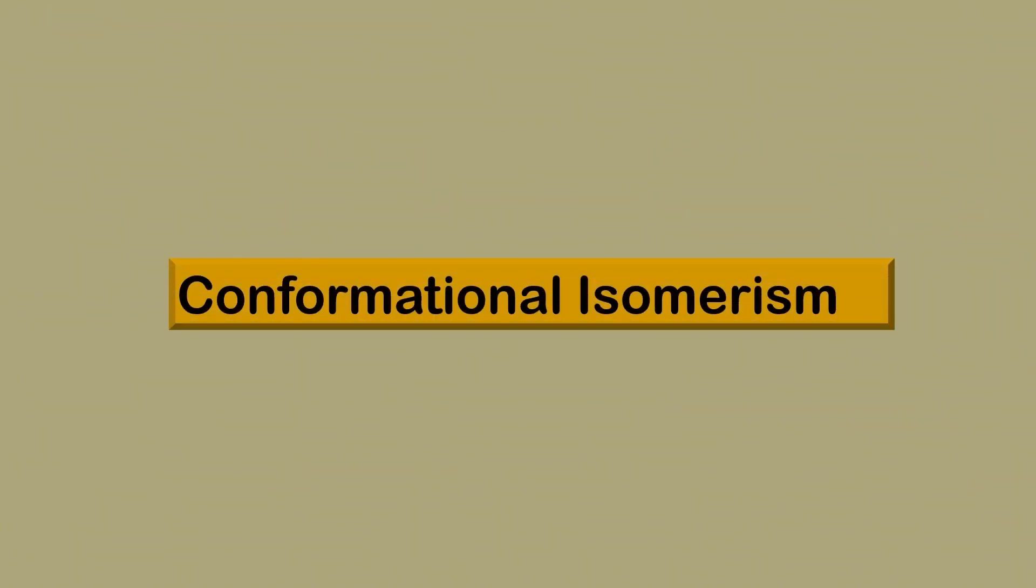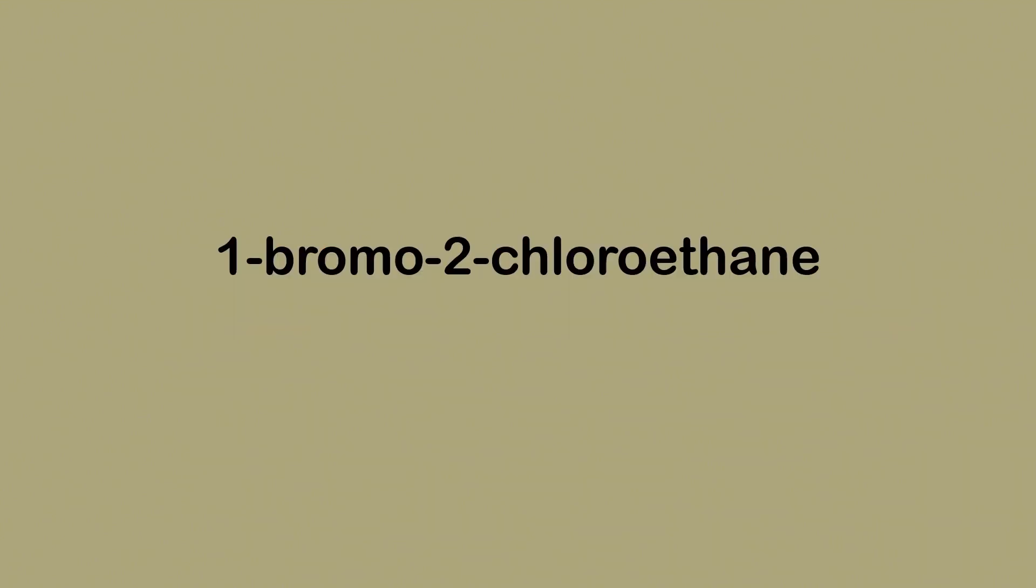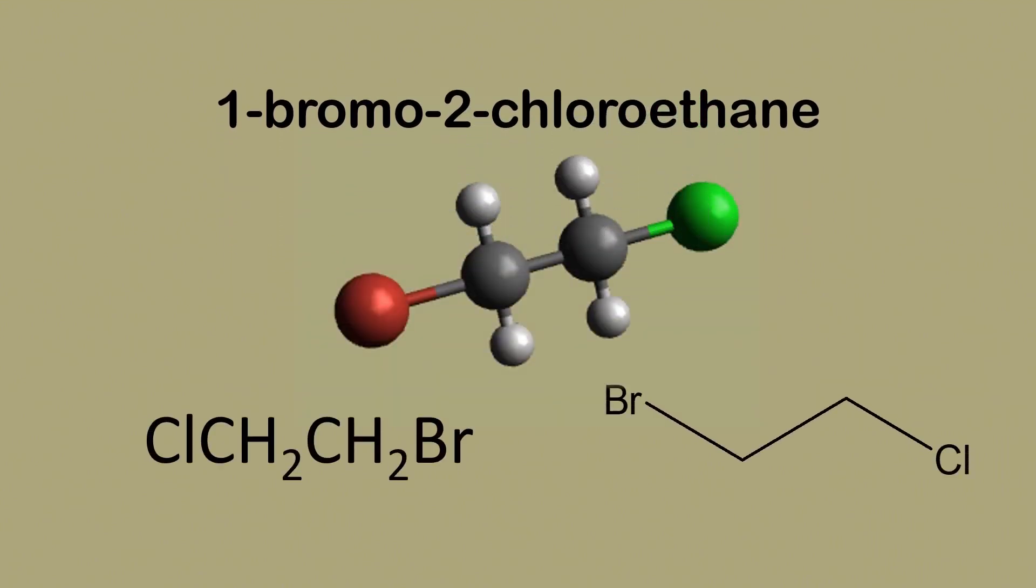Let's explore conformational isomerism. For illustration, let's use 1-bromo-2-chloroethane. This molecule has a carbon-carbon single bond, and the bonds that attach to those carbon atoms are capable of rotation, resulting in two different isomers, which we shall call conformers in this case.